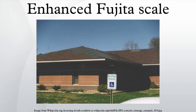Better standardizing and elucidating what was previously subjective and ambiguous, it also adds more types of structures and vegetation, expands degrees of damage, and better accounts for variables such as differences in construction quality. The new scale was publicly unveiled by the National Weather Service at a conference of the American Meteorological Society in Atlanta on February 2, 2006. It was developed from 2000 to 2004 by the Fujita Scale Enhancement Project at the Wind Science and Engineering Research Center at Texas Tech University, which brought together dozens of expert meteorologists and civil engineers. As with the Fujita Scale, the Enhanced Fujita Scale remains a damage scale and only a proxy for actual wind speeds.